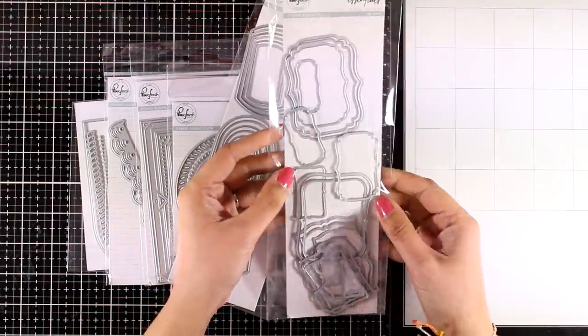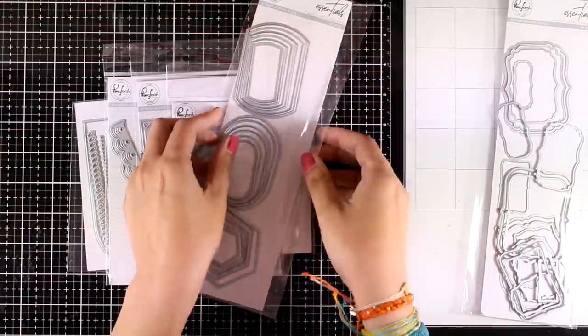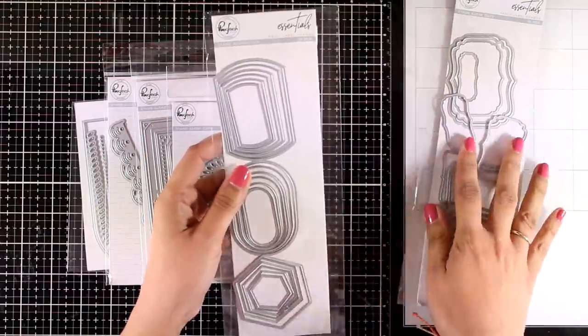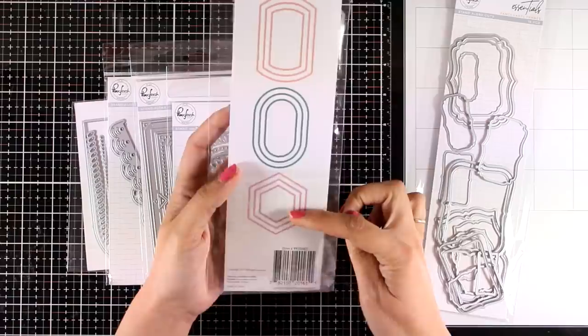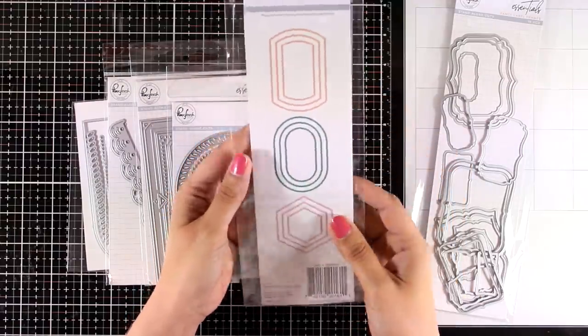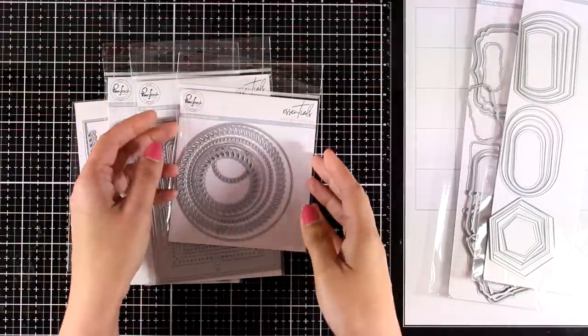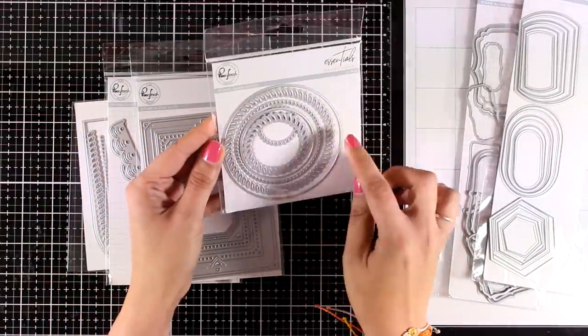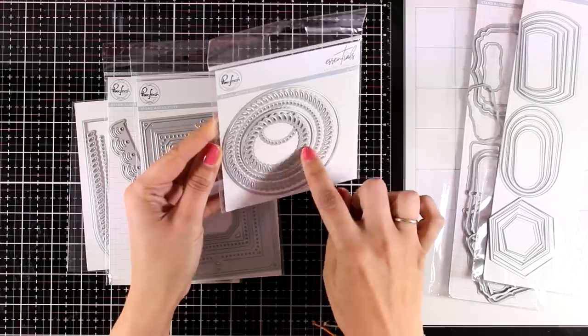You can create windows with them or use them as labels and stamp your sentiments. This is something similar to the previous die set - again 12 dies, but this is called Basic Label Frames. So depending on your style, you can choose your favorite label frames.